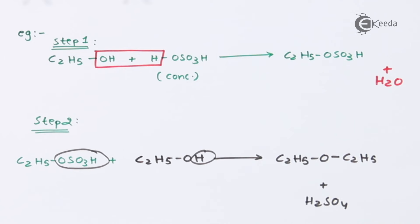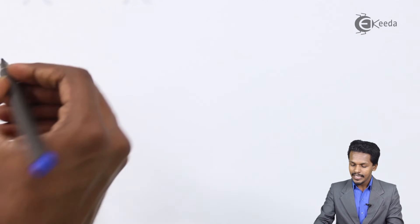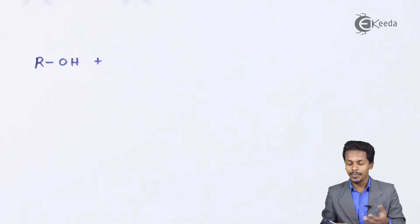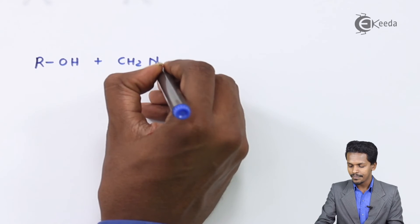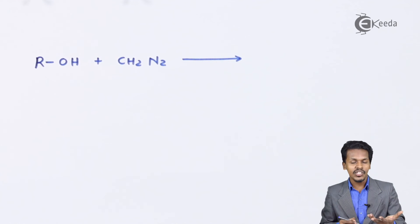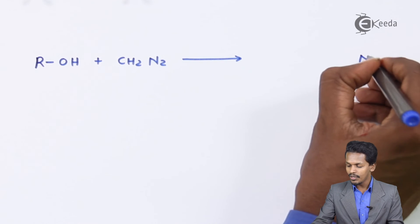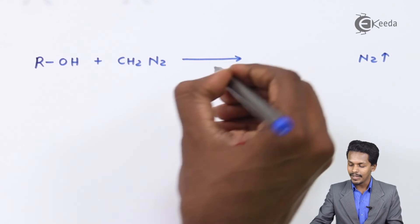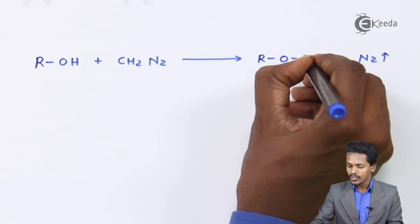That covered Steps 1 and 2 — one method to convert alcohol to ether. There is another method: reaction with diazomethane (CH₂N₂). In the general reaction, ROH treated with CH₂N₂ causes N₂ to evolve, and the CH₂ group combines with the hydrogen to give the product ROCH₃.